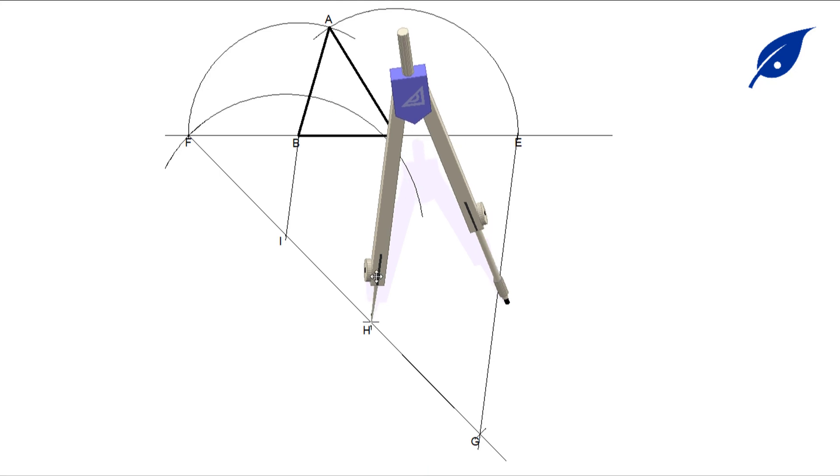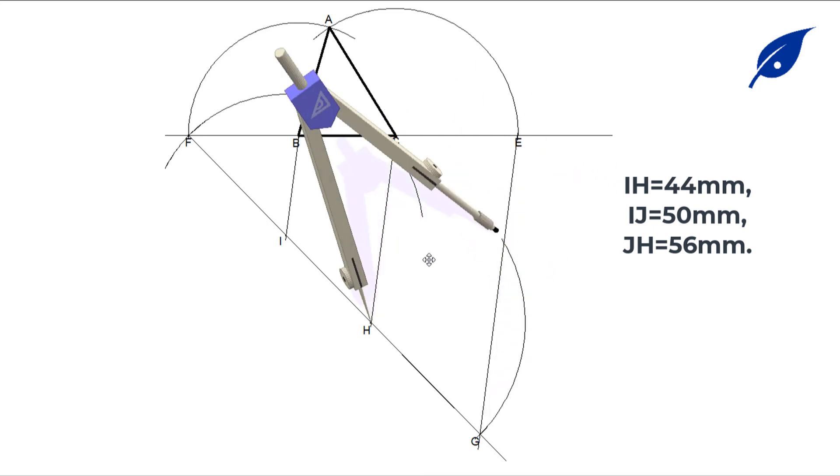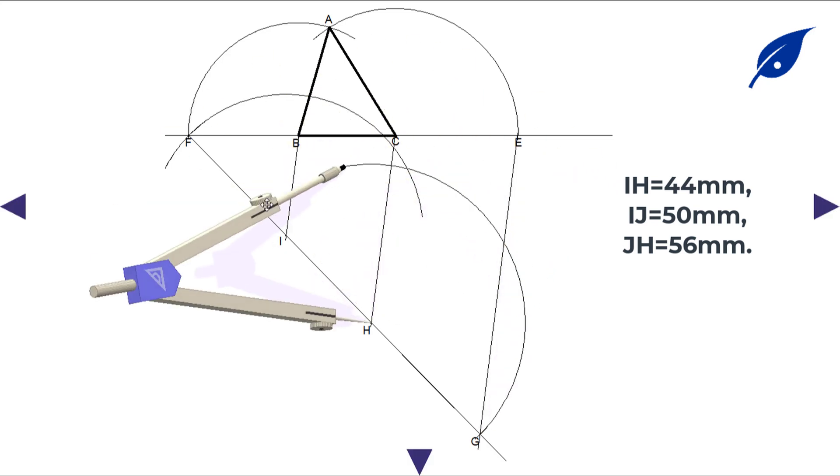At that point we'll get J. Connect J to I, H to J, and H to I, which is the similar triangle JHI to triangle ABC. These are their respective lengths for each of the sides, which are still in the ratio of 8 to 7 to 9.